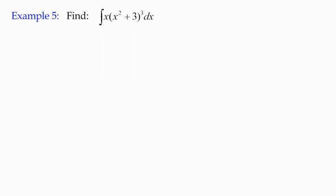Here's Example 5: Find the integral of x multiplied by (x² + 3)³ with respect to x. Now you could, if you had a push, evaluate (x² + 3)³ and multiply the result by x and you'd get a polynomial, a sum of terms, but we don't want to do that.